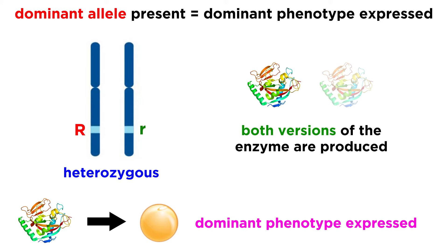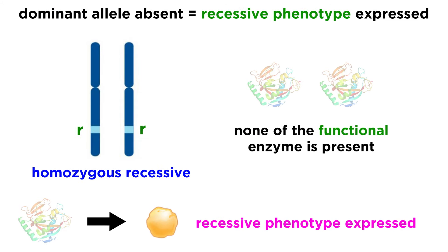With the heterozygous organism, both the effective enzyme and the defective enzyme are produced, but there is enough of the effective version to get the job done. Only if homozygous recessive will there be no effective enzyme present at all, in which case the seed will wrinkle.